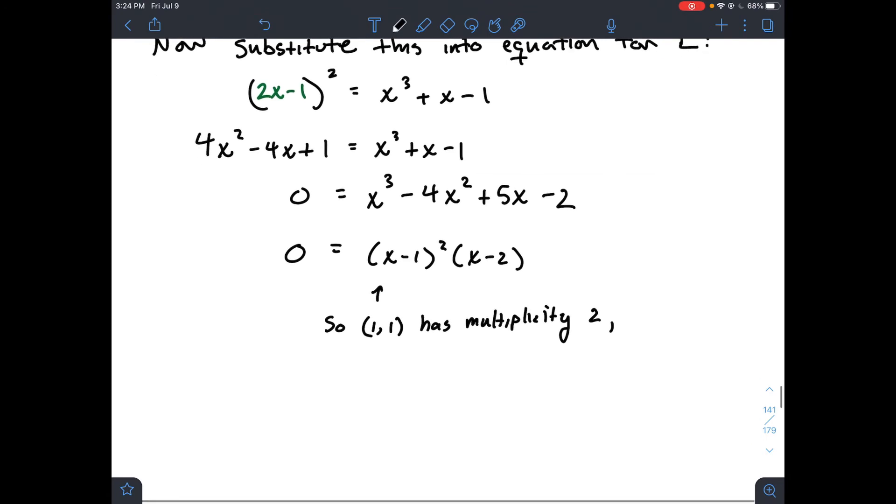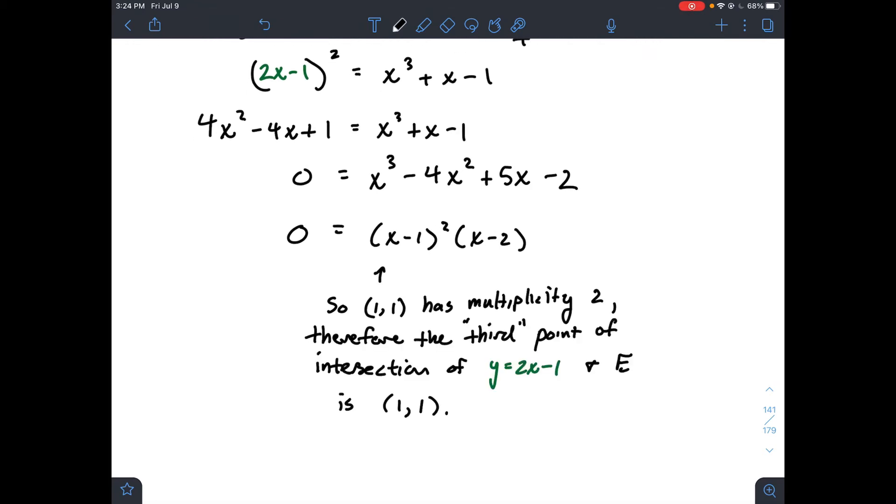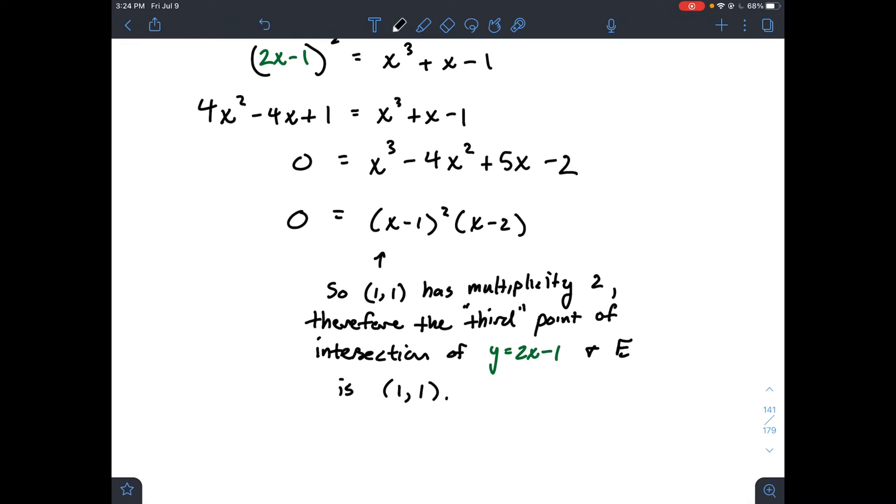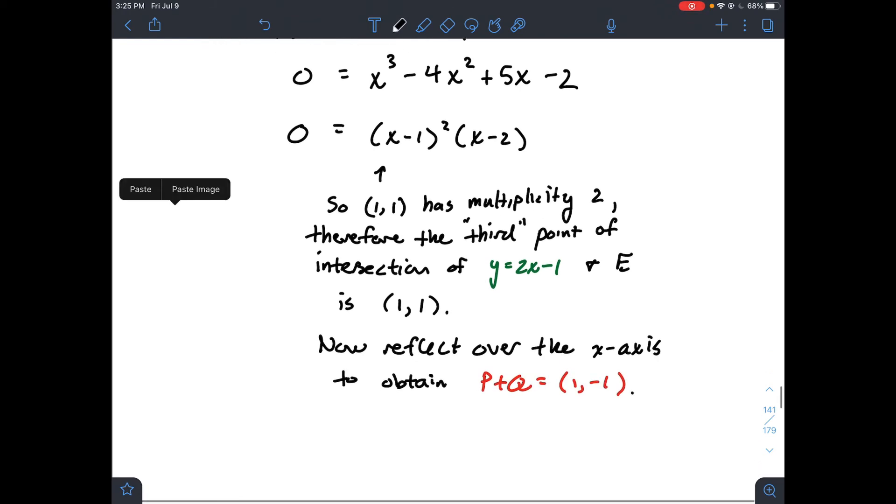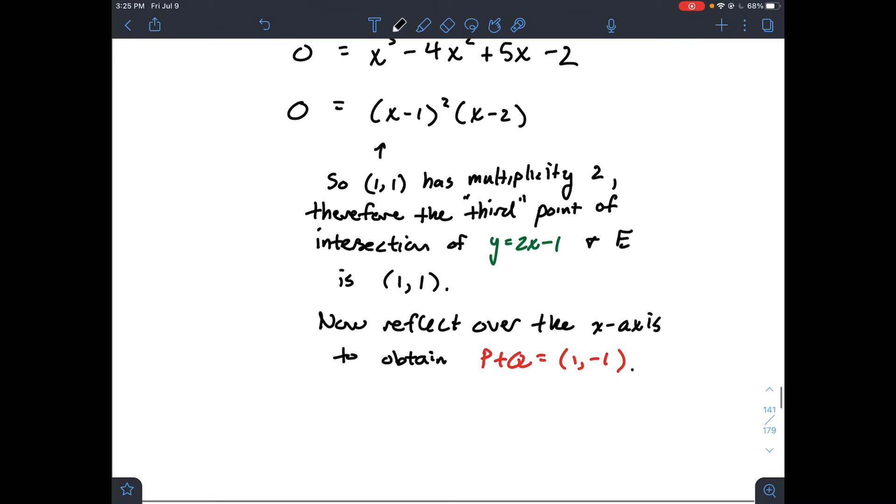So what does that tell me? That says the point (1,1), it has multiplicity 2, right? Remember that's that exponent up here? So it's a solution twice. And what else does it tell me? Well, what's the third point of intersection between the line between p and q and E? Well, that tells me that the line, we're going to think of it as hitting the point (1,1) one more time. So (1,1) is the third point of intersection of the line through p and q with E. Now what we do is take (1,1) and reflect it over the x-axis to obtain p plus q would be (1,-1).